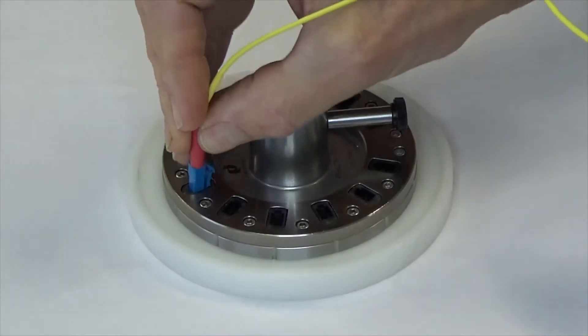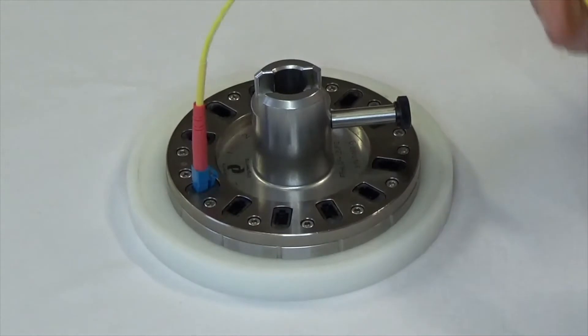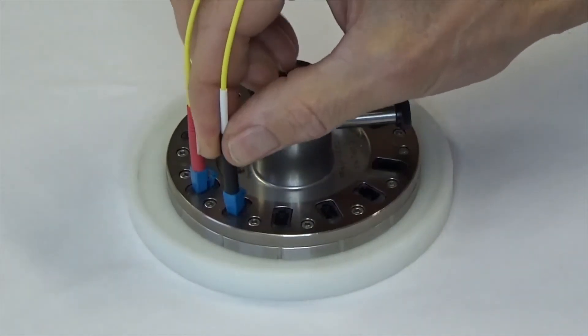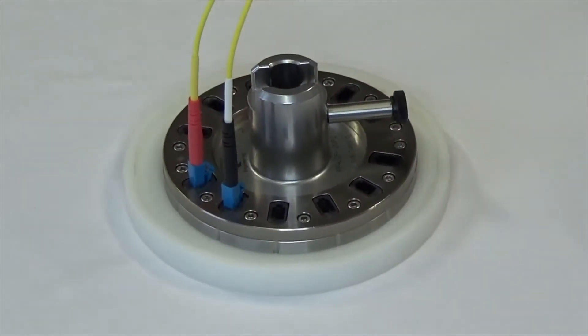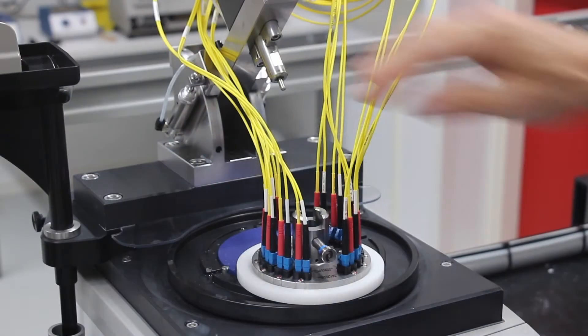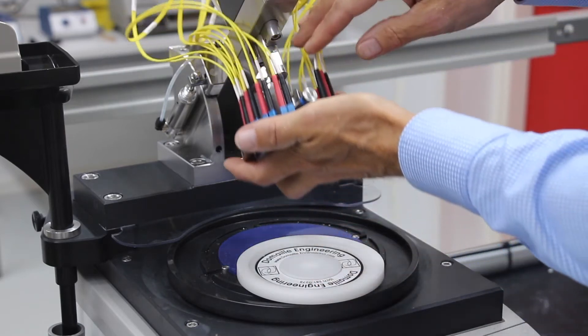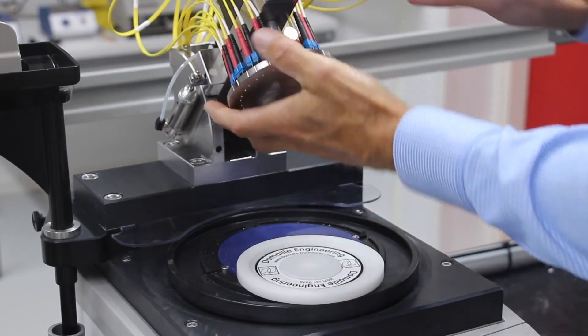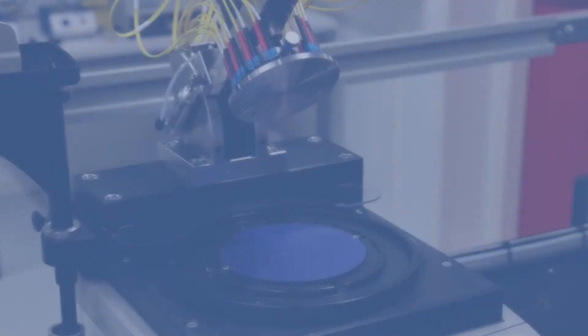For better machine operational efficiency, we recommend offline loading while another batch is polished. Once the fixture is loaded with connectors, the operator will slide the fixture onto the mandrel, connecting the fixture to the overarm assembly.